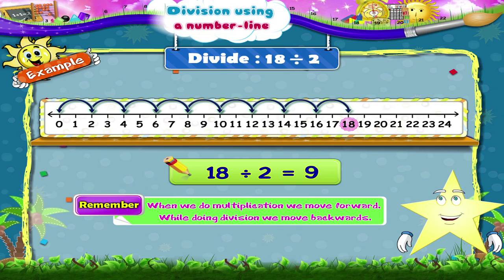Remember Starry, when we do multiplication, we move forward. While doing division, we move backwards.